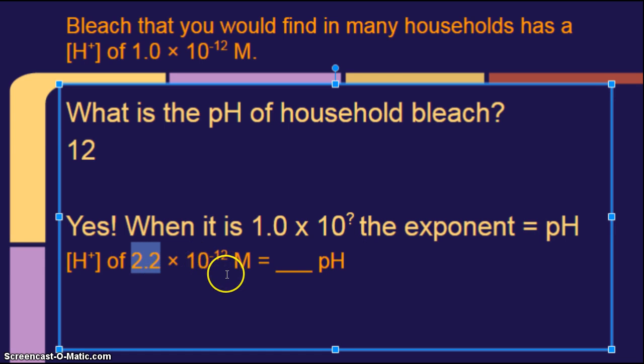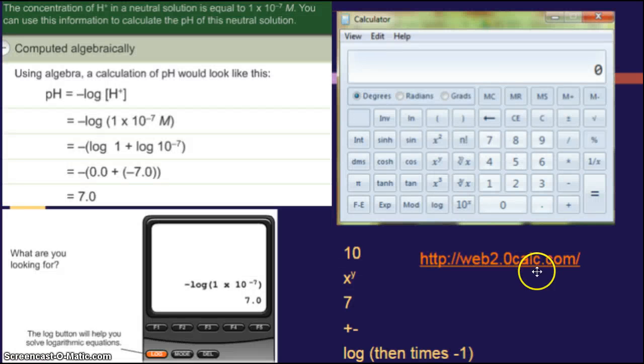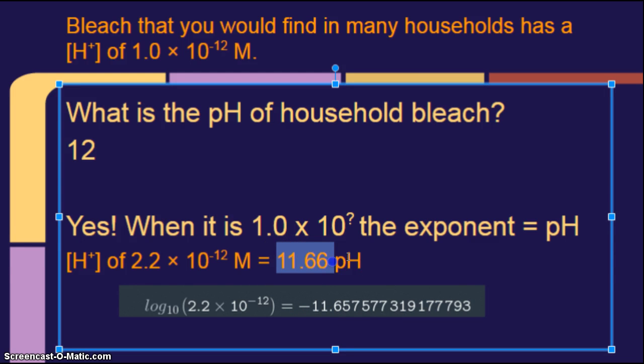But usually they give you a number in front of the times 10 to the, so then you have to be able to put it in your calculator. Okay, so go ahead and put this one in your calculator. And so, again, what our formula is, is the negative log of the concentration of hydrogen ions, and that will equal your pH. So, what's our concentration of hydrogen ions? It would be this. So I would put that into my formula, and I would get negative 11.657577 blah, blah, blah. Yeah, this is what it looks like if you use that web 2.0 calculator link that I put up here. Okay, and I like it because you can see, oh, yeah, log base 10, but it still just means log, 2.2 times 10 to the negative 12th. I got my parentheses in there. I got my answer. Make my answer positive. Round it to hundredths. And what would I get? I would get 11.66 is my pH.